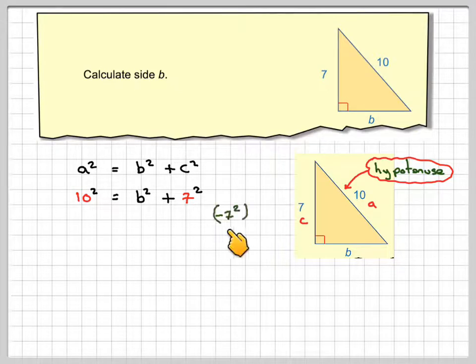To rearrange that, we'd have to take 7 squared from both sides. So we get 10 squared minus 7 squared, which is equal to B squared. That's going to be 100 minus 49 is equal to B squared.